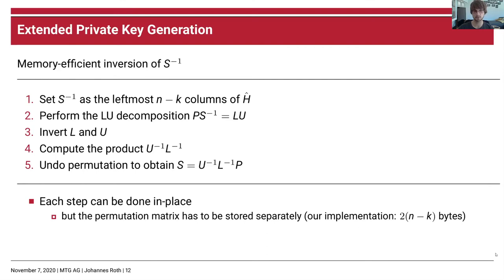In-place inversion is possible because of the special structure of L and U, and it essentially amounts to backward and forward substitution. Then we compute the product of the inverse of U and the inverse of L in place, writing the resulting matrix into the buffer where the inverse of S used to be, exploiting the special matrix structure. Finally, in the fifth step, we undo the permutation and obtain S, expressed as the inverse of U times the inverse of L times P.